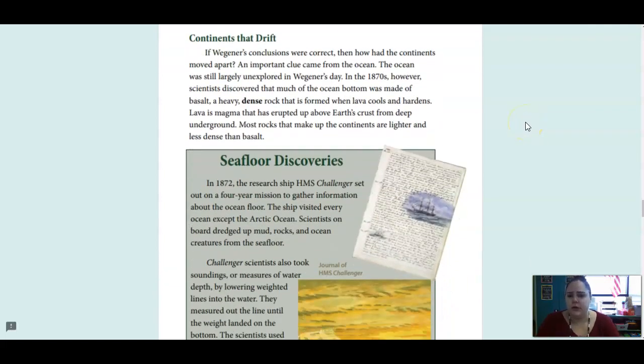If Wegener's conclusions were correct, then how had the continents moved apart? An important clue came from the ocean. The ocean was still largely unexplored in Wegener's day. In the 1870s, however, scientists discovered that much of the ocean's bottom was made of basalt, a heavy, dense rock that is formed when lava cools and hardens. Lava is magma that has erupted up above Earth's crust from deep underground. Most rocks that make up the continents are lighter and less dense than basalt.